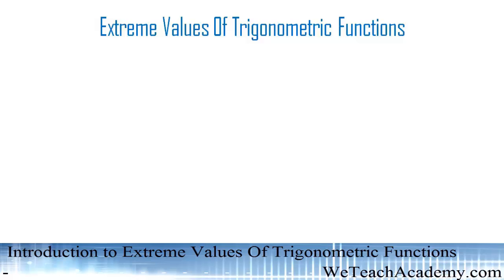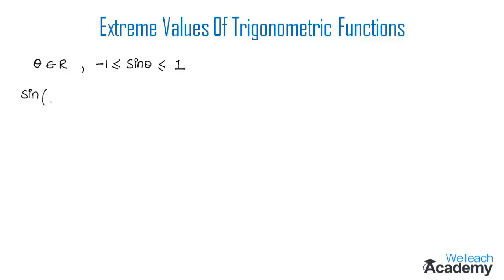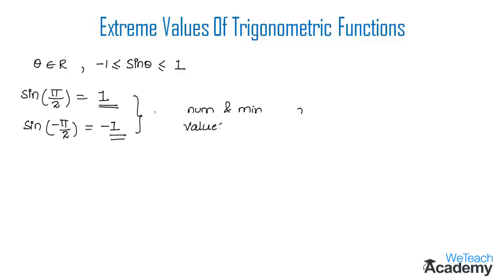Welcome to vdchacademy.com. In this presentation we are going to discuss extreme values of trigonometric functions. We have already discussed that for any angle theta belonging to R, minus 1 is less than or equal to sine theta less than or equal to 1. That is, sine theta always lies between minus 1 and 1, and we know that sine of pi by 2 equals 1 and sine of minus pi by 2 equals minus 1. Hence the maximum and minimum values of sine theta are respectively 1 and minus 1 as theta ranges over R.